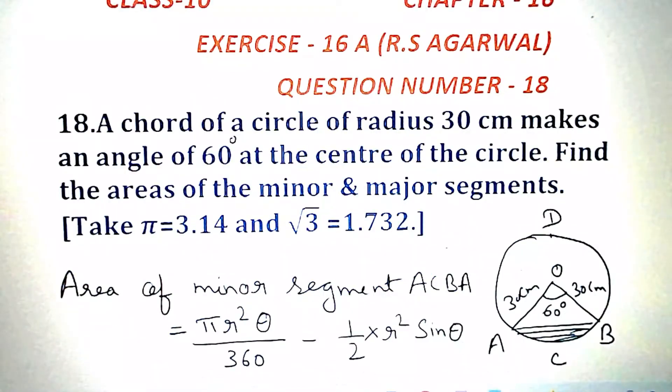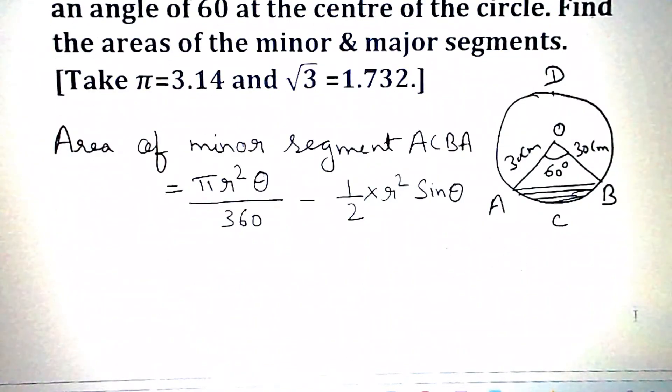Area of minor segment ACB is equal to pi r square theta by 360 minus half into r square sine theta.